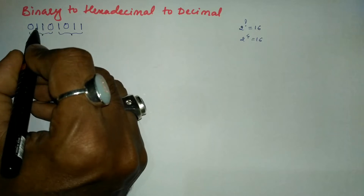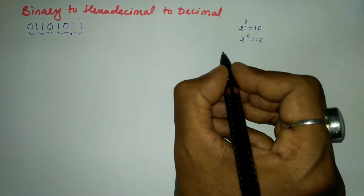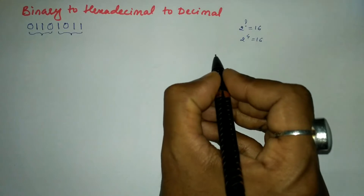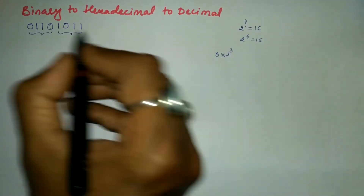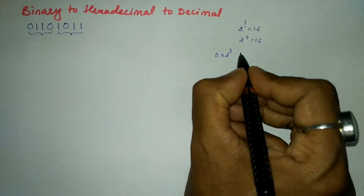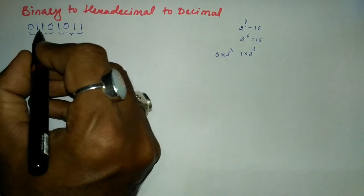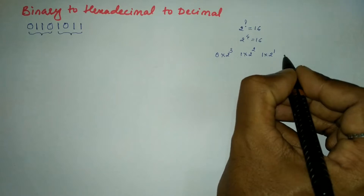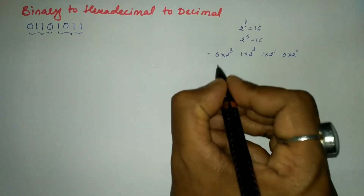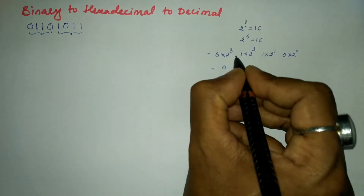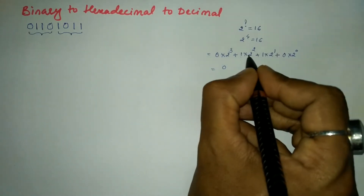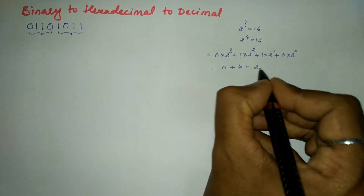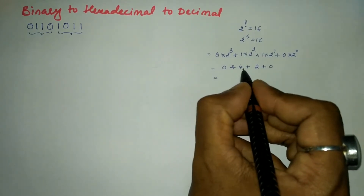Now let us convert each group into its decimal equivalent. For 0110: the positional weight of the bits is 0, 1, 2, 3 from right to left. So we calculate 0×2³ + 1×2² + 1×2¹ + 0×2⁰. Zero times anything is zero; 2² is 4, so 1×4 = 4; 2¹ is 2, so 1×2 = 2; and zero times anything is zero. So 4 + 2 = 6.